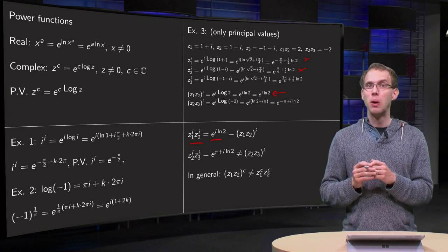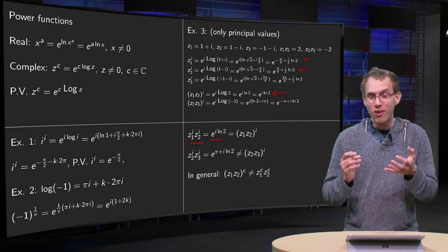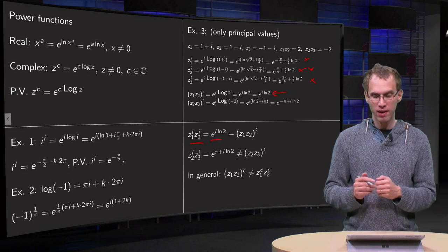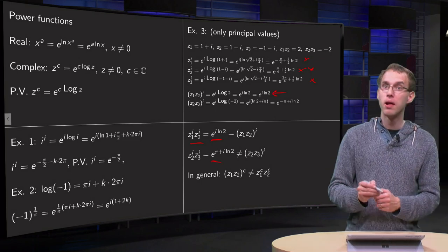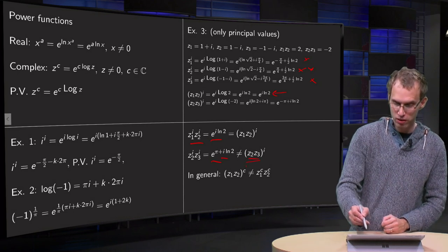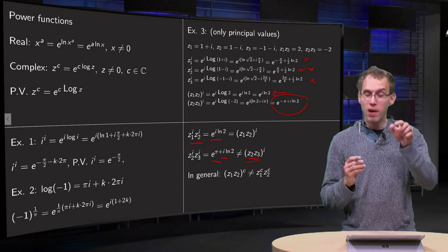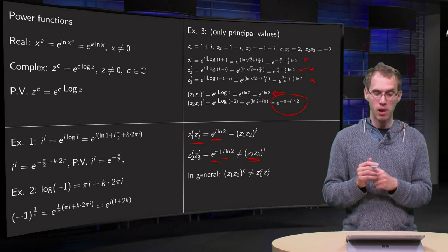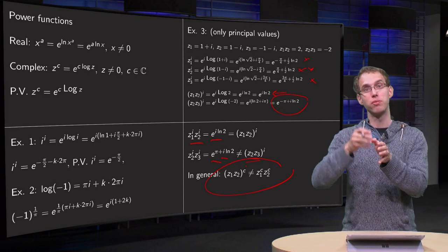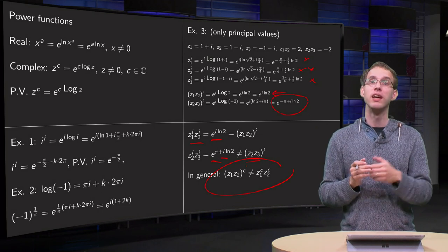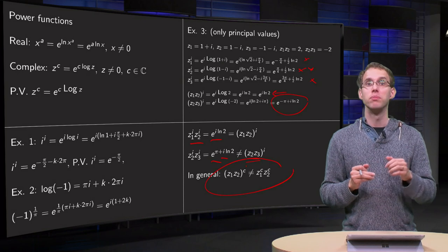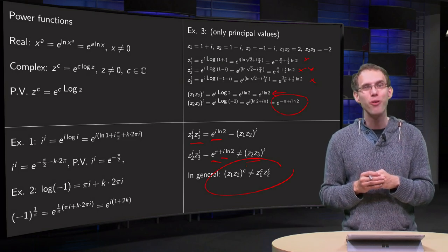It's only a coincidence that it worked in the first case. In general, the familiar rule — z1 times z2 to the power c equals z1 to the power c times z2 to the power c — does not hold anymore. So be careful with power functions, because your familiar rules may not hold anymore.